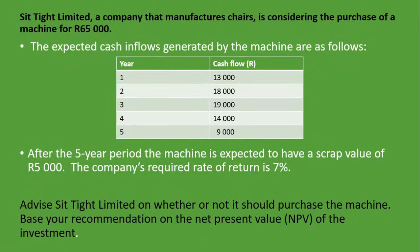We are asked to advise Sittite Limited on whether or not it should purchase the machine, based on the net present value of the investment. The net present value lets us know whether we should accept or reject the investment. If the NPV is negative, we will reject the investment. If it's positive, we will generally accept it.